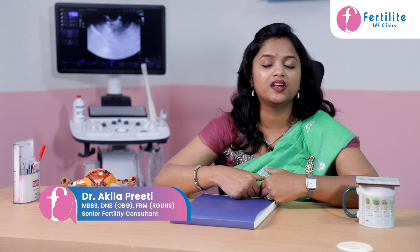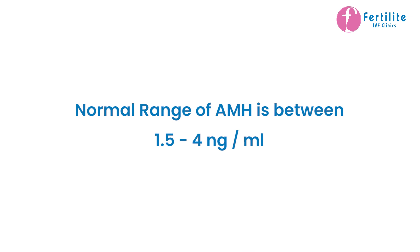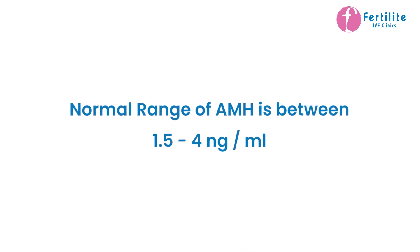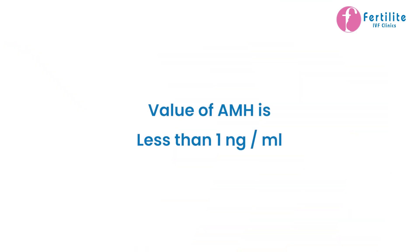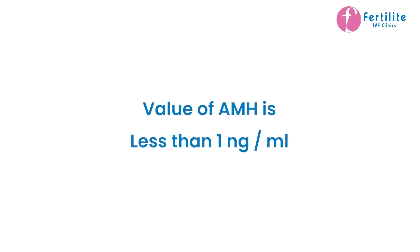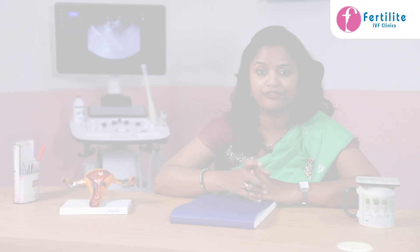The normal range of AMH is between 1.5 to 4 nanogram per ml. If her AMH value is less than 1.5, she needs to plan her pregnancy as soon as possible. But if the value of AMH is less than 1, she cannot wait at all — she needs to plan her pregnancy as soon as possible with assisted reproductive technologies like IUI and IVF.